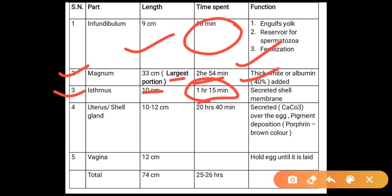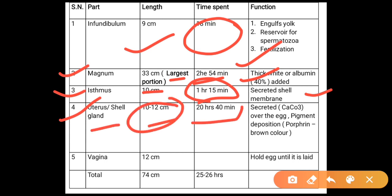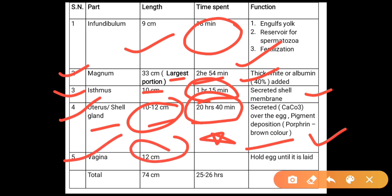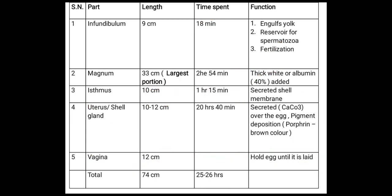The isthmus is about 10 cm long; the egg spends about 1 hour 15 minutes here, and its function is secreting the shell membrane. The uterus or shell gland is about 10–12 cm; the egg spends about 12 hours 40 minutes here. It secretes calcium carbonate over the egg and deposits pigments like porphyrin, which gives a brown color to the egg. The vagina is about 12 cm and holds the egg until it is laid. Total oviduct length is about 74 cm; total egg production time is 25–26 hours.